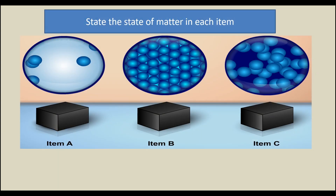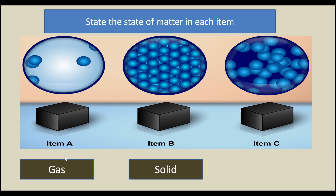Let's answer a few questions. What are items A, B and C? Item A is a gas, item B is a solid, and item C is a liquid.